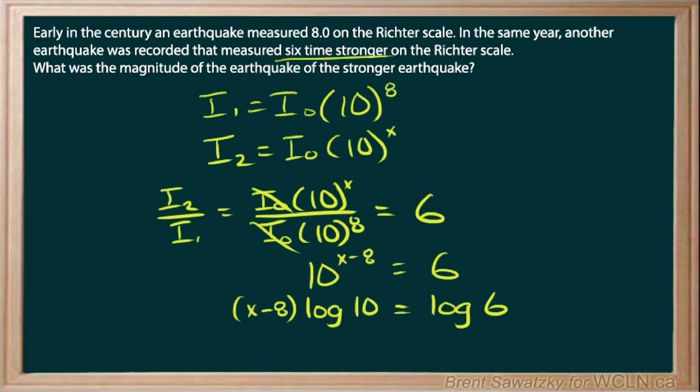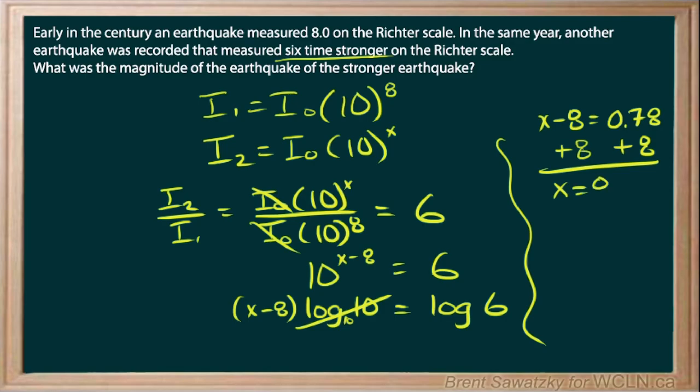Now we know that log base ten of ten is just one. And so really, we have, and we can draw a little line. Didn't leave quite enough room here. x minus eight equals... And if we stick log six into our calculator, we come up with 0.78. And so solving for x, let's add eight to both sides. And we're left with x equals 8.78. And there's our answer.